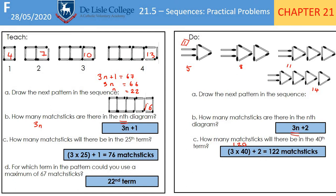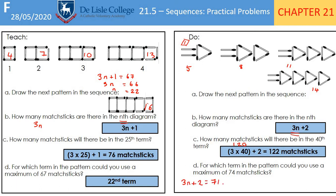Students often find this trickiest: for which term could you use a maximum of 74 matchsticks? Write 3n + 2 = 74. Subtract 2 from both sides to get 3n = 72, then divide both sides by 3. You should end up with n = 24, so it's the 24th term. Pause the video if you haven't managed it — copy it down and get all the right bits.